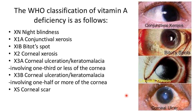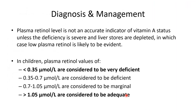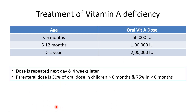Vitamin A deficiency diagnosis is primarily clinical. Plasma retinol level is not an accurate indicator unless deficiency is very severe and liver stores are depleted. In children, plasma retinol less than 0.35 micromoles/L indicates severe deficiency, while more than 1.05 micromoles/L is adequate. Treatment doses: under 6 months — 50,000 IU oral; 6–12 months — 1,00,000 IU; over 1 year — 2,00,000 IU.